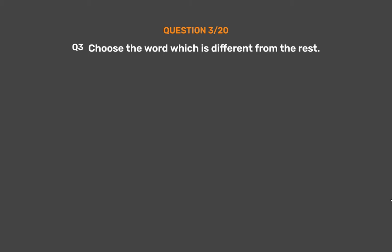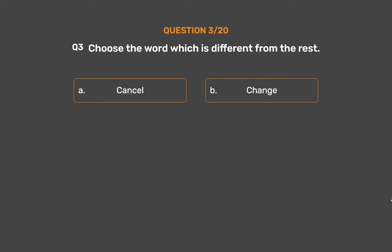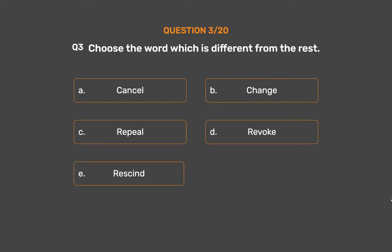Question number 3. Choose the word which is different from the rest. Option A: Cancel. Option B: Change. Option C: Repeal. Option D: Revoke. Option E: Rescind.